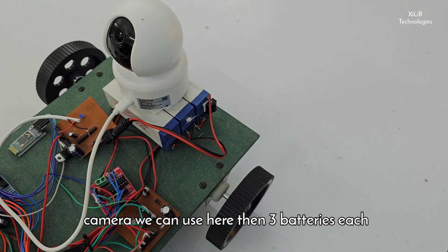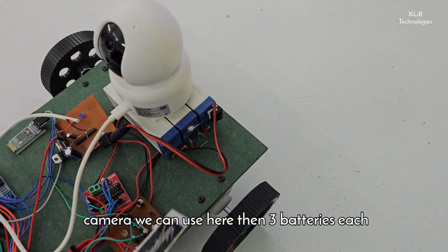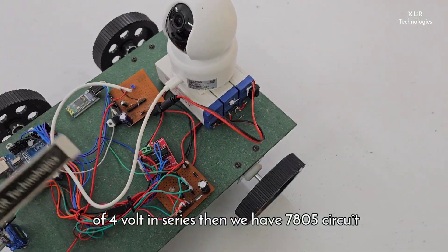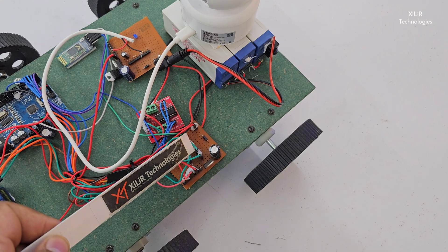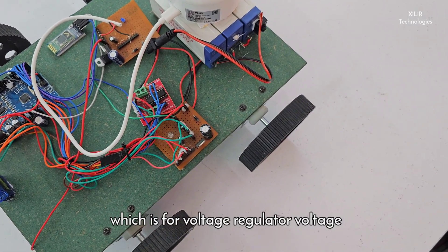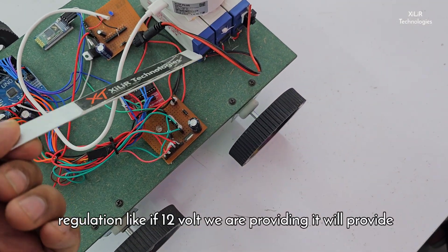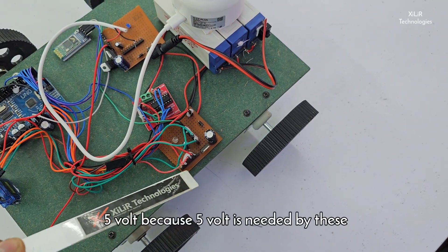Then three batteries, each of four volts in series. Then we have 7805 circuit which is for voltage regulator, voltage regulation. Like if 12 volt we are providing, it will provide 5 volt because 5 volt is needed by these components.